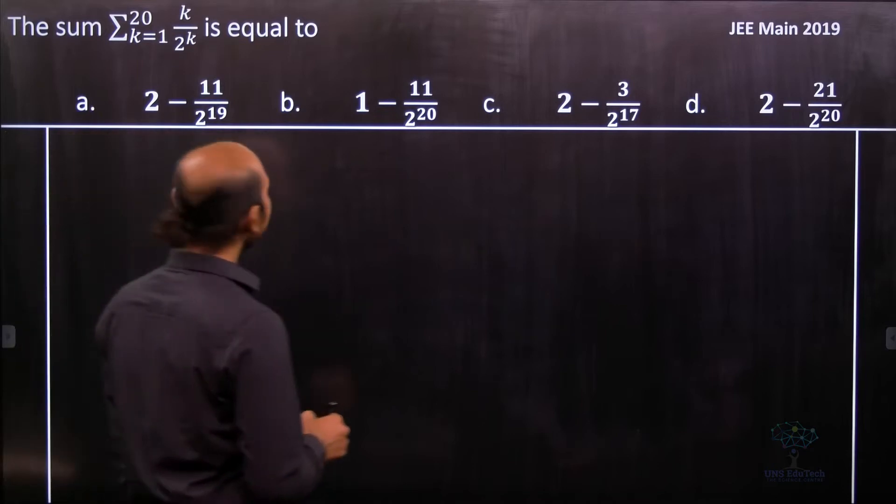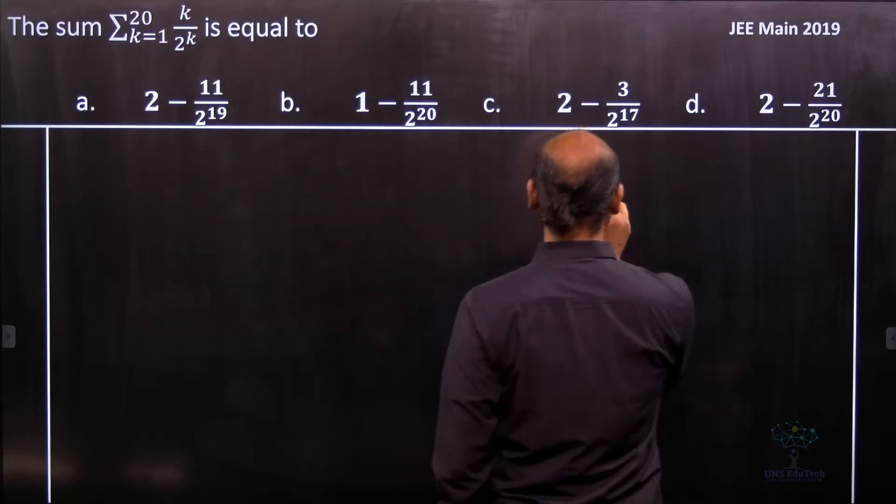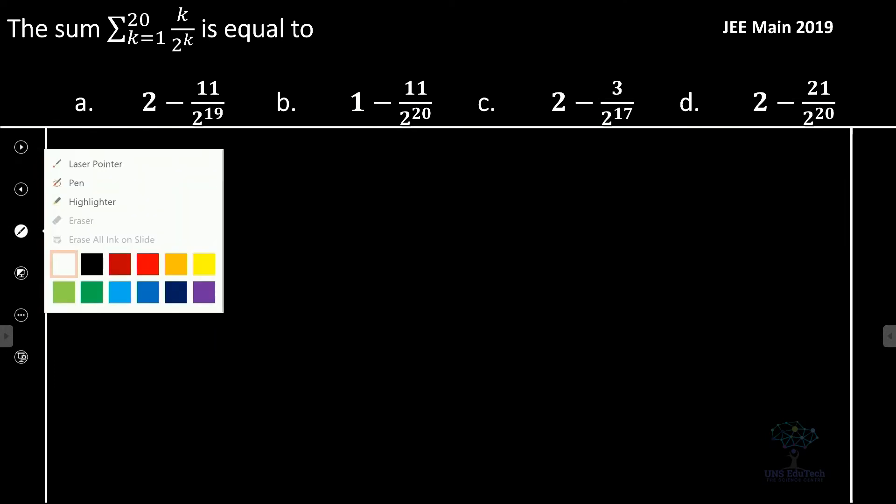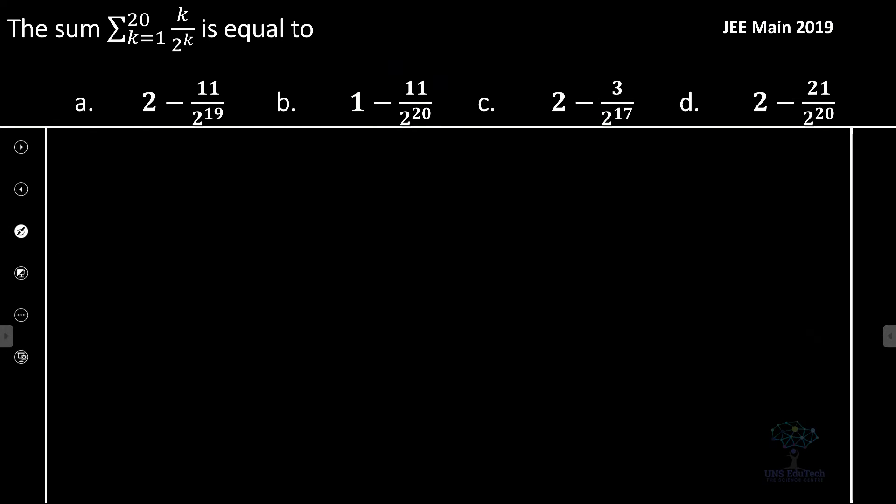So here first we consider what is s, so let us consider the term called s. The required sum s is equal to summation of k equals 1 to 20 and k by 2 to the power k. So here let's write down the sum.